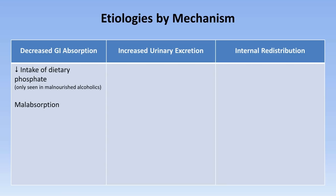Next, a patient could have malabsorption from any one of dozens of primary GI illnesses. And the patient could be taking phosphate binders, either excessive doses of those used for hyperphosphatemia, such as calcium acetate, or alternatively, the patient could be taking excessive doses of aluminum and magnesium-containing antacids.